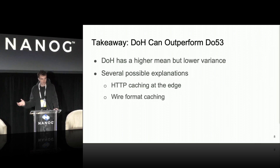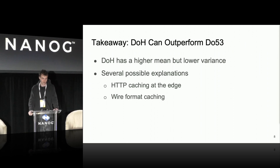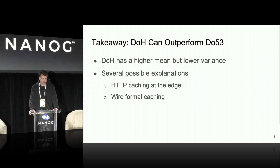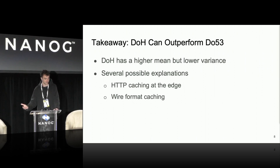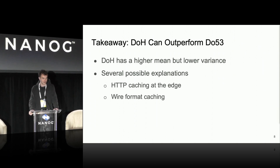Digging in further: in terms of response times, DOH actually has a higher mean overall but a much lower variance than unencrypted DNS. We observed this across different vantage points, though for this talk I'm focusing on Ohio EC2 results. A couple of explanations we considered: one is wire format caching, where the entire wire format might be cached for HTTP, enabling faster response times. We also thought that in the case of a CDN like Cloudflare, they might be doing HTTP caching at the edge, very close to the user, which could also improve DOH response times compared to traditional DNS.